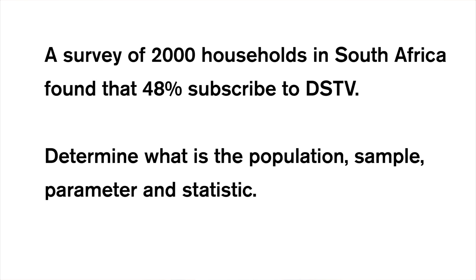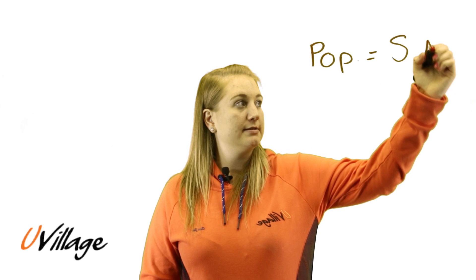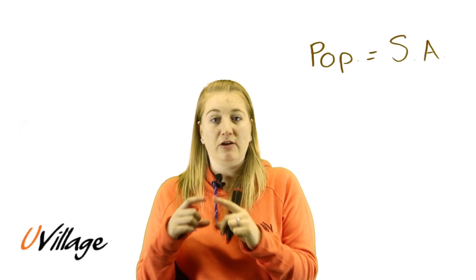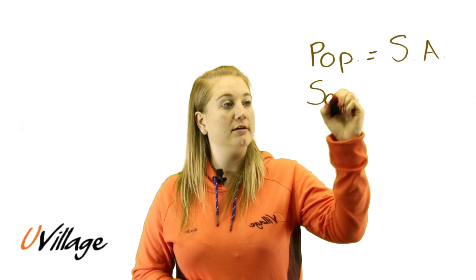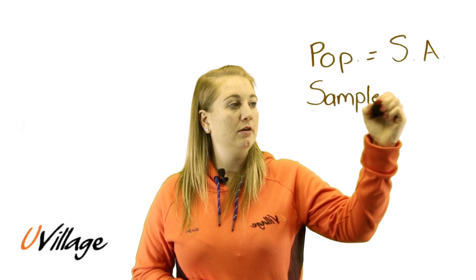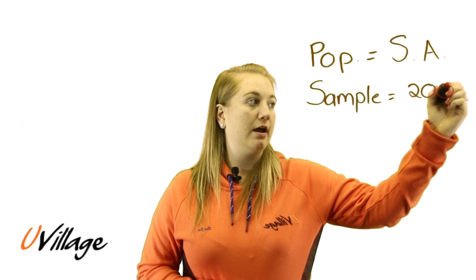Let's look at an example. Suppose a survey of 2,000 households in South Africa found that 48% subscribed to DSTV. Determine what the population, sample, parameter, and statistic are. Because 2,000 households in South Africa were randomly surveyed, our population of interest would be all the households in South Africa, and the 2,000 of them would represent our sample — the 2,000 South African households that were surveyed.